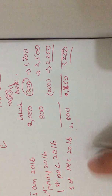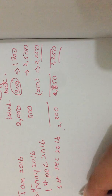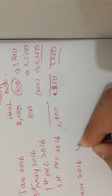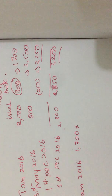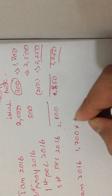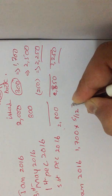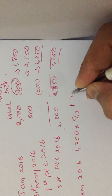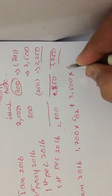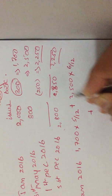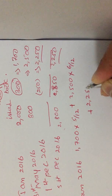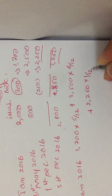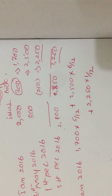Now we calculate the weighted average number of shares. From January 2016, we had 1,700 shares for five months (January to May). Then 2,500 shares for six months. Then 2,250 shares for one month only.